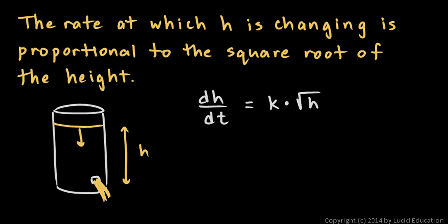We're not told to solve the differential equation, just to find it. The rate at which h is changing is proportional to the square root of the height, so that means it's equal to some constant times the square root of the height.